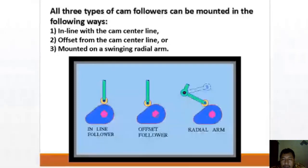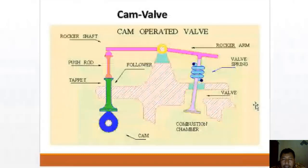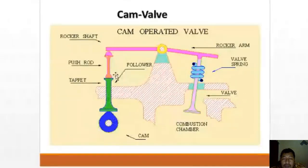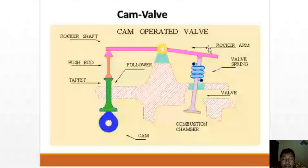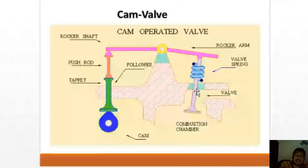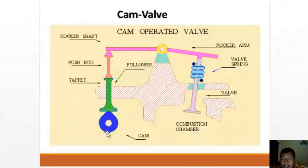The cam valve mechanism in a combustion engine: there is a cam, a follower, a push rod, and a rocker shaft. When the cam is at its highest position, it moves the push rod, which actuates the rocker arm (templar in Dutch). The rocker arm presses the intake valve open, allowing fuel-air mixture to enter the combustion chamber. When the cam returns to the low position, there is no more pressure and the valve closes, returning to its original position via the spring.